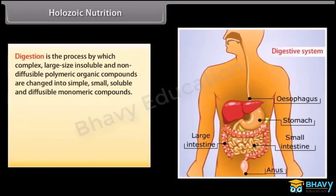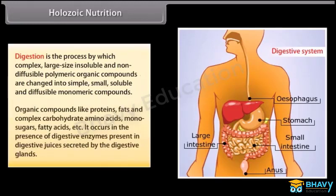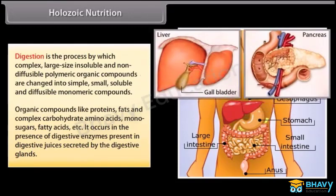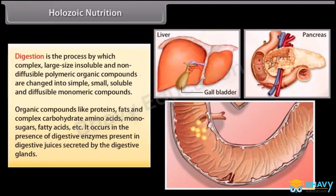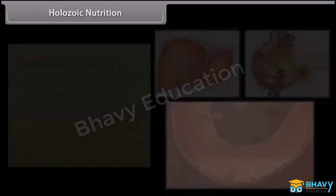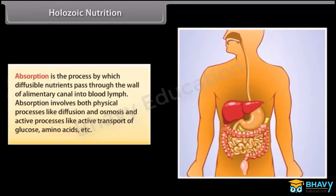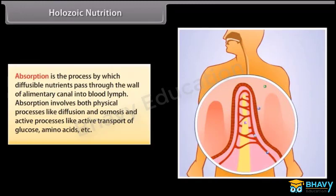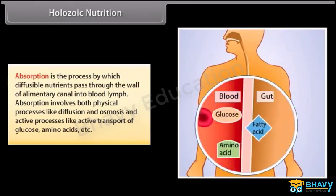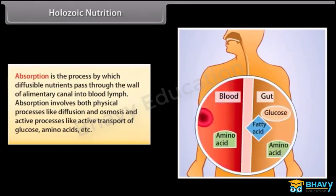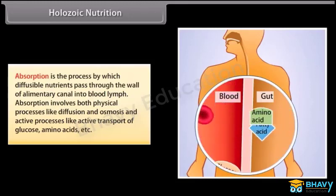Digestion is the process by which complex, large-size, insoluble and non-diffusible polymeric organic compounds are changed into simple, small, soluble and diffusible monomeric compounds. Organic compounds like proteins, fats and complex carbohydrates are broken down into amino acids, monosugars and fatty acids, etc. It occurs in the presence of digestive enzymes present in digestive juices secreted by the digestive glands. Absorption is the process by which diffusible nutrients pass through the wall of the alimentary canal into blood and lymph. Absorption involves both physical processes like diffusion and osmosis, and active processes like active transport of glucose, amino acids, etc.